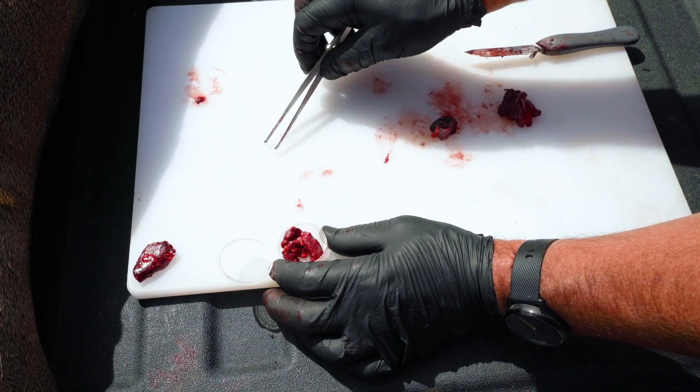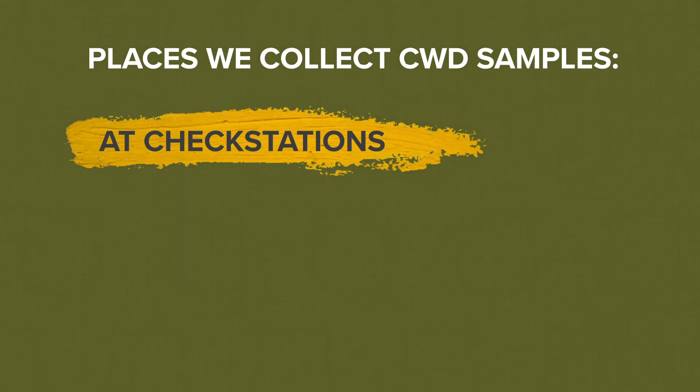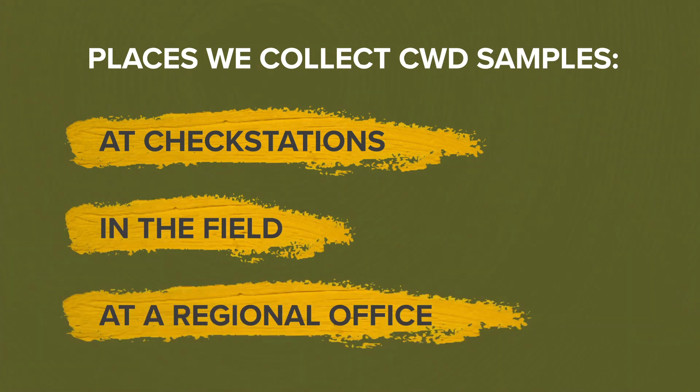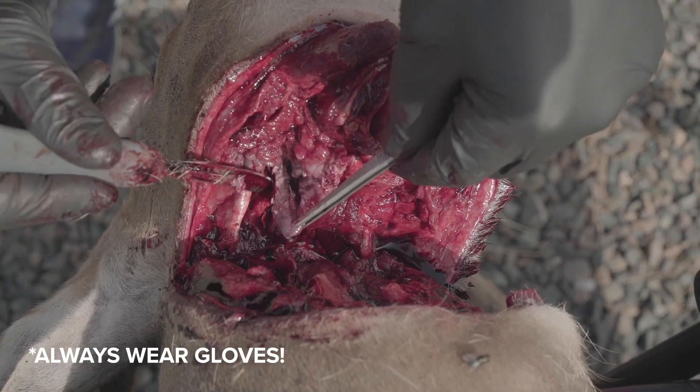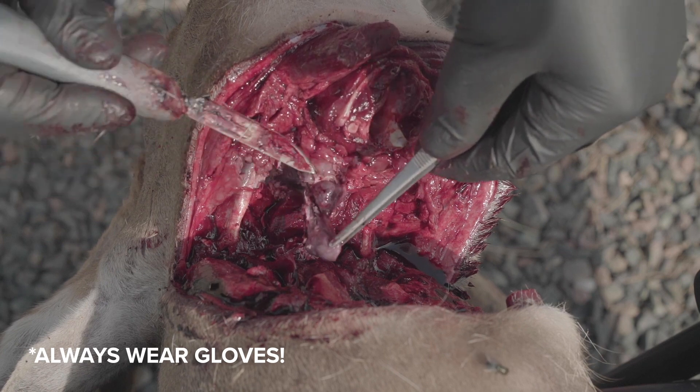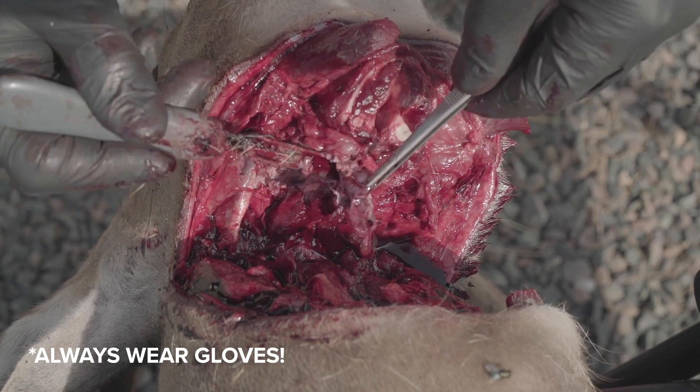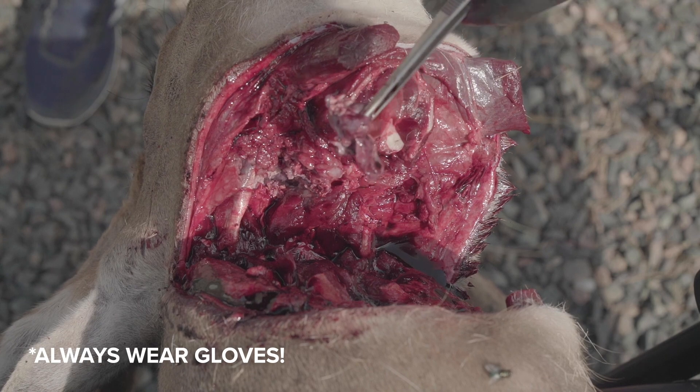The first step is to collect and submit a sample. We collect CWD samples at check stations, in the field, at our regional offices, or receive samples from hunters. The sample is collected from the head. Leave about two inches of neck attached to ensure that we can collect the lymph nodes for testing.